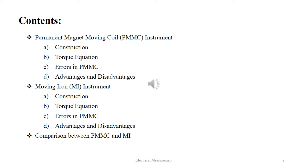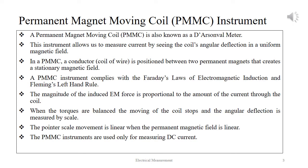Finally, we will have a comparison between PMMC and MI instruments. A permanent magnet moving coil is also known as D'Arsonval meter. The instrument allows us to measure current by seeing the coil's angular deflection in a uniform magnetic field. In a PMMC, a conductor is positioned between two permanent magnets that creates a stationary magnetic field. A PMMC instrument complies with Faraday's laws of electromagnetic induction and Fleming's left-hand rule. The magnitude of the induced EMF is proportional to the amount of current through the coil.